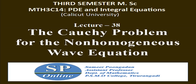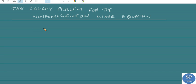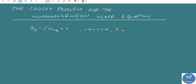In this lecture, we will discuss the Cauchy problem for the non-homogeneous wave equation. We already discussed that the homogeneous wave equation has the form u_tt minus c squared times u_xx equal to 0, for minus infinity less than x less than infinity and t greater than 0. This is the homogeneous wave equation.